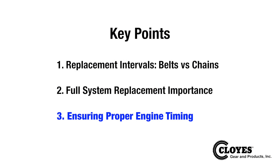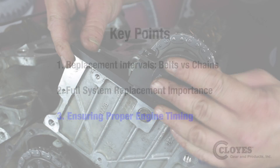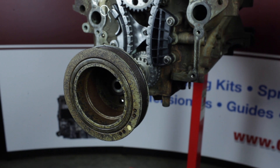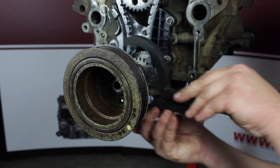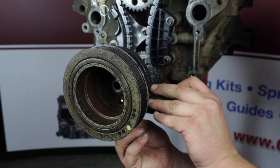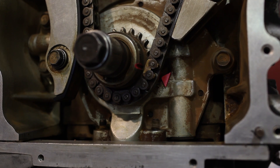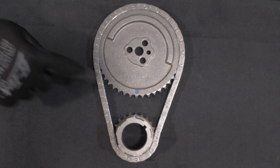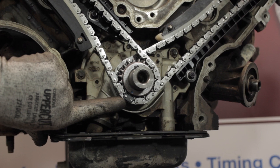The only exception to total replacement is the possible reuse of sprockets with our available sprocketless kits. There is no universal way to time an engine — every engine has a specific, often complex procedure to set the engine's timing. Special tools may be required to set and or hold shafts during this procedure. Some applications require aligning marks to static locations on the engine's block or head, some align sprocket marks to other sprocket marks, and some applications use marked chain links and sprocket timing marks to align the shafts properly.